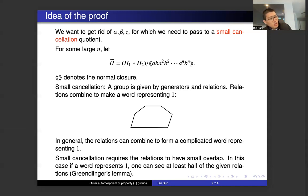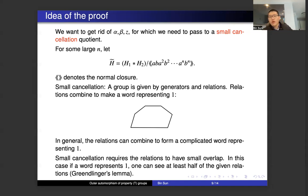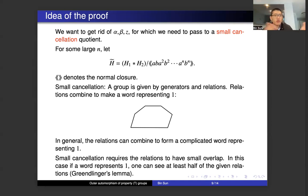The Greendlinger Lemma makes it easier to tell whether a word represents the identity. Given a word, you search for half of one of the relations in it. When you see such a piece, you replace that half by the other half of the relation — usually the shorter half — and then keep going. You can keep reducing the word further and further because the total length decreases. The process stops when you either find the word contains no half of any given relation (so it does not represent the identity), or you reduce all the way to the trivial word (so it does represent the identity).